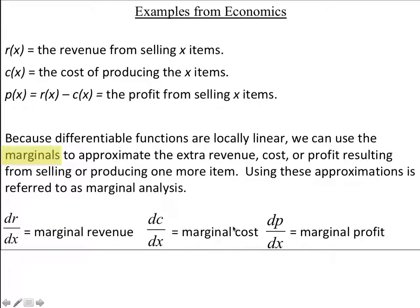If we take the difference of those two and differentiate the profit function, that's the marginal profit — the additional money that we would get to keep as a result of selling one more and buying the materials to make one more item. We're going to use this idea of a marginal to work on optimization problems dealing with economics.